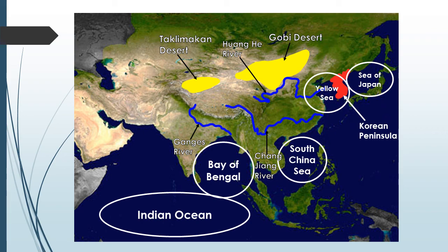This is the Korean Peninsula. It consists of North and South Korea. It's surrounded by the Yellow Sea and the Sea of Japan, and it's bordered to the north by China and Russia.